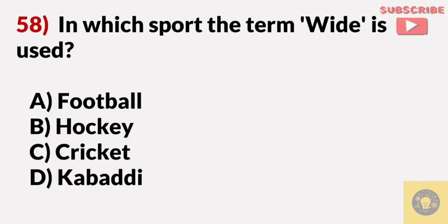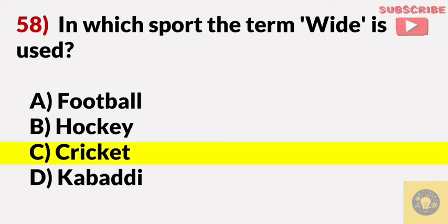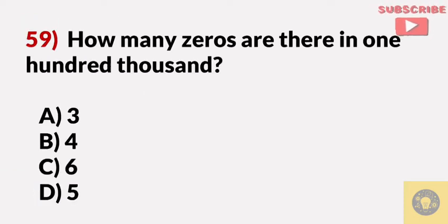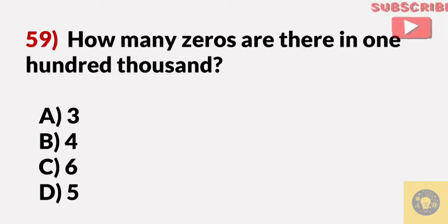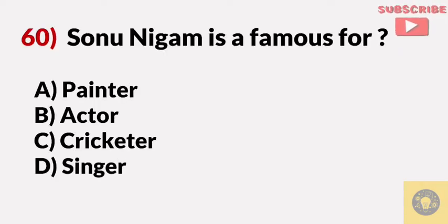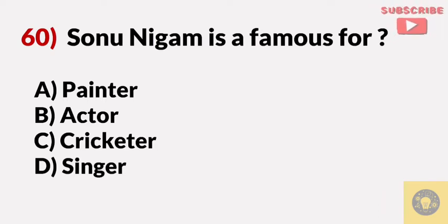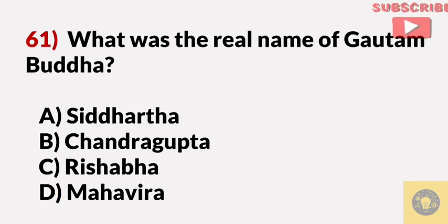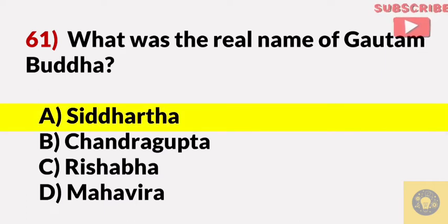In which sport is the term 'wide' used? Answer C, cricket. How many zeros are there in one hundred thousand? Answer D, five. Sonu Nigam is a famous? Answer D, singer. What was the real name of Gautam Buddha? Answer A, Siddharth.